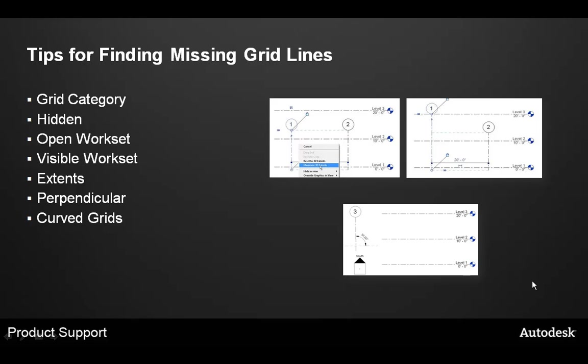Do the extents of the grid cross the view in question? Datum planes such as grids aren't visible in views if they don't intersect the view's plane. Try going to a view where you can see the grid, right-click it, and choose 'Maximize 3D Extents' to see if it shows up in the view in question. A good general rule is to set the primary levels before laying out the grid — this will force grids to display on all levels.